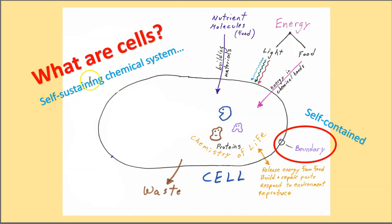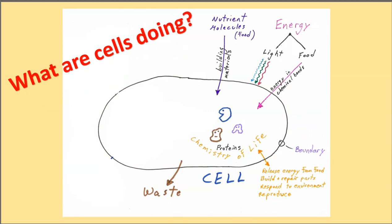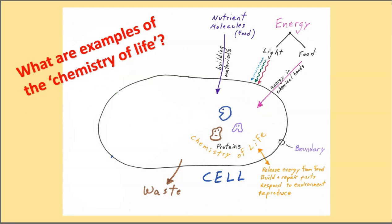Well, what are cells doing? They're doing what we're calling the chemistry of life. So this is how they're sustaining themselves. What are examples of the chemistry of life? These down here. Cells are releasing energy from food. They are building and repairing cell parts, which are just molecules. They're responding to the environment in useful ways. And they're reproducing. So these are all examples of the chemistry of life.